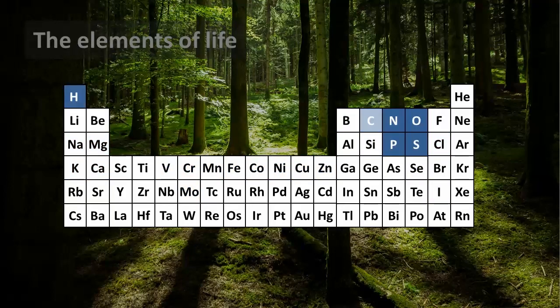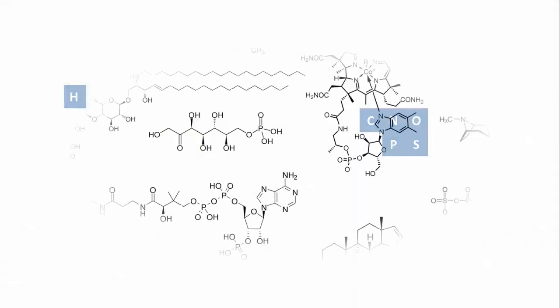But the actual chemistry we're going to look at here happens just with six of these elements: hydrogen, carbon, nitrogen, oxygen, phosphorus, and sulfur. That's no coincidence because these are the only ones that can form large complex molecules.